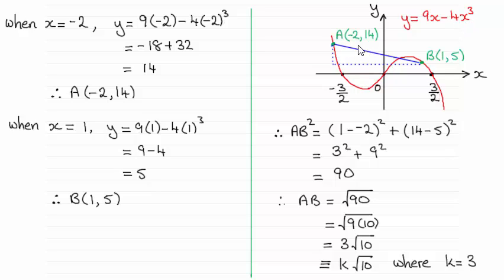The x-coordinates of A and B were minus 2 and 1 respectively. And we had to show that the length AB turned out to be something of the form k root 10, where k, the constant k, was an integer we had to find. And it turns out that k equals 3.